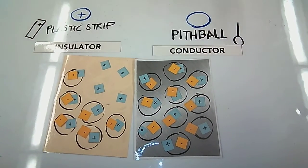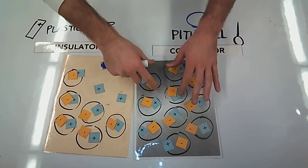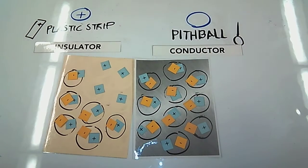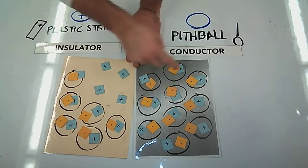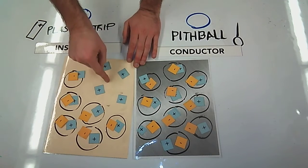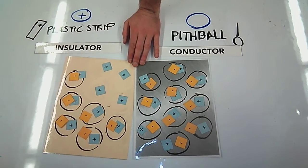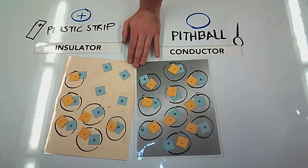So when they touch, we want to ask the question: where do electrons want to go? In this case, I have some exposed protons. So the electrons in my object right here are attracted to the exposed protons in my insulating strip.